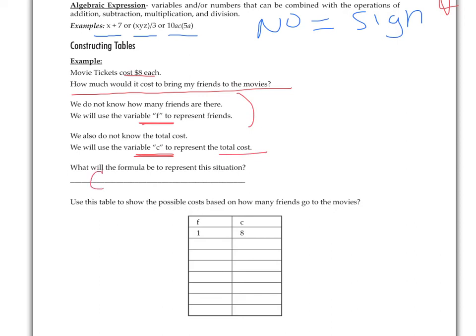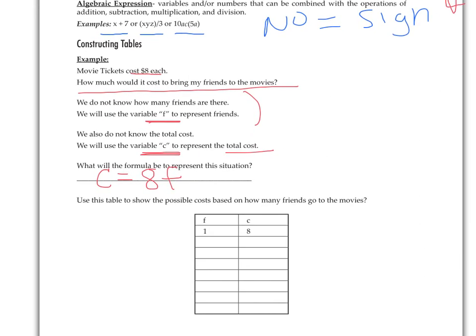So what will be the formula to represent this situation? So we're looking for C, so we're going to say C is going to be equal to. Each ticket costs $8, so it's going to be 8 times F for the number of friends I have. So this is the equation for this situation. The cost, which is represented by C, the cost is equal to the number of friends F times 8, which is how much each ticket costs.